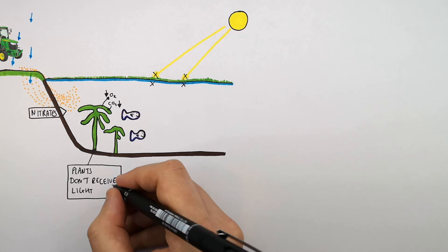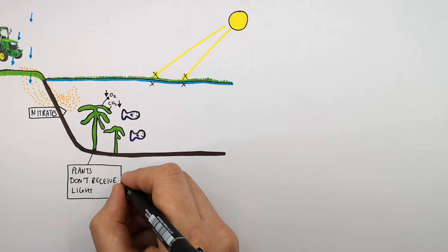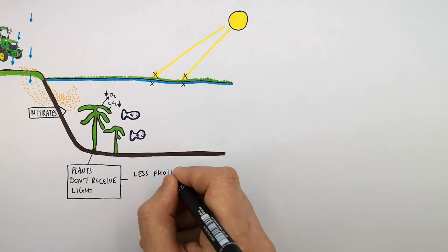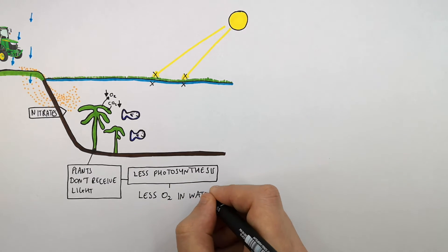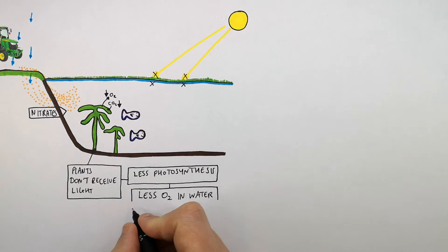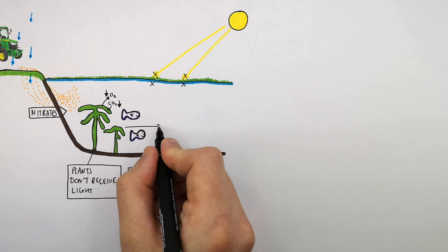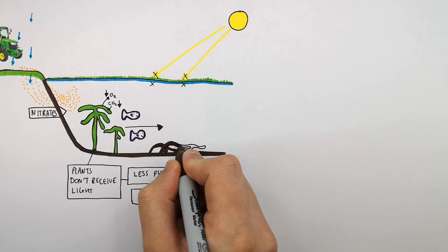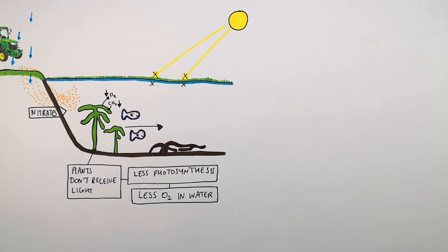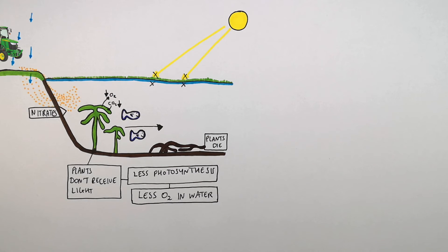Oxygen is vital to the survival of all living organisms in the lake. With less photosynthesis, there is less oxygen being released into the water, meaning the oxygen concentration decreases. The plants are going to die, which means there is going to be less oxygen being supplied to the water, and oxygen levels continue to decrease in the lake over time.